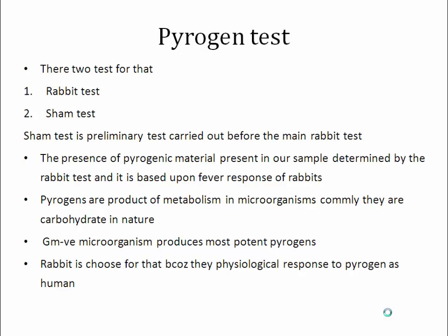Moving to the next test — the pyrogen test. This can be carried out by two methods: the rabbit test and the sham test. The sham test is a preliminary screening method to determine what criteria rabbits must meet to be used in the test. The presence of pyrogenic material in the rabbit causes an increase in body temperature. Pyrogen products are metabolites of microorganisms, commonly carbohydrate in nature, found in both gram-positive and gram-negative bacteria, though gram-negative microorganisms are the most potent pyrogens.